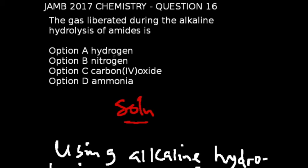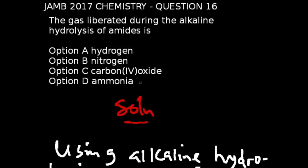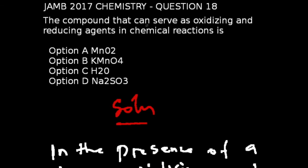Question 16 of the JAMB 2017 chemistry exams: The gas liberated during the alkaline hydrolysis of amide is... Alkaline hydrolysis is technically a reaction that yields ammonia gas as a product. Using alkaline hydrolysis to test for amide, if we add sodium hydroxide to an unknown compound, we're going to have ammonia gas as a product. Option D is the correct answer.